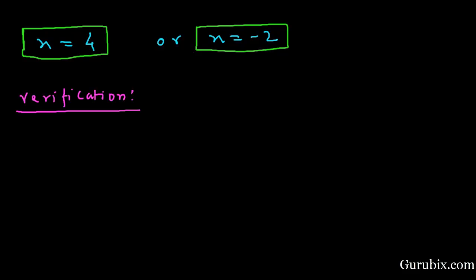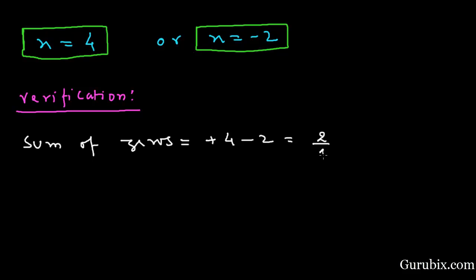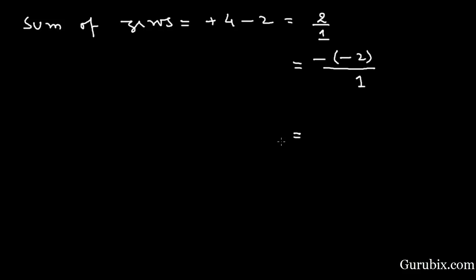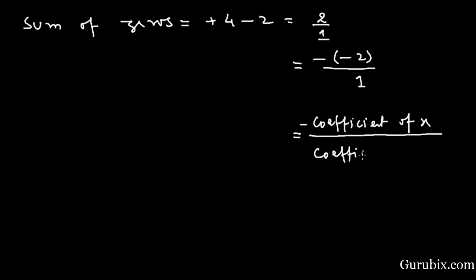First, we shall find the sum of zeros. The sum of zeros is plus 4 plus (minus 2), which equals plus 2. We can write this as 2 over 1, or equivalently as minus (minus 2) over 1. This ratio equals the ratio of the coefficient of x to the coefficient of x squared, that is minus (coefficient of x) over (coefficient of x squared). Hence this relationship is verified.